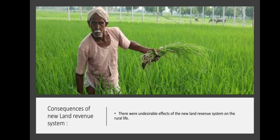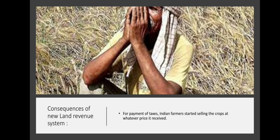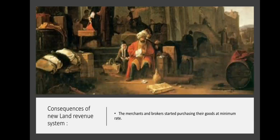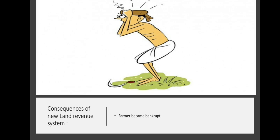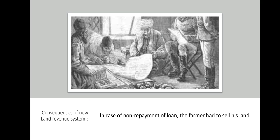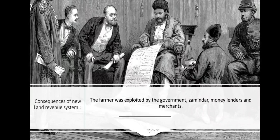Consequences of the new land revenue system. There were undesirable effects on rural life. For payment of taxes, Indian farmers started selling crops at whatever price they received. Merchants and brokers purchased their goods at minimum rates. At times, the farmer had to mortgage his land to the moneylender to arrange money to pay tax. The farmer became bankrupt, and in case of non-repayment of loan, he had to sell his land. The farmer was exploited by the government, zamindar, moneylenders and merchants.